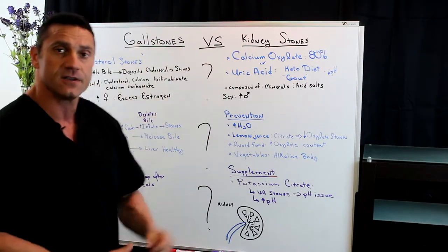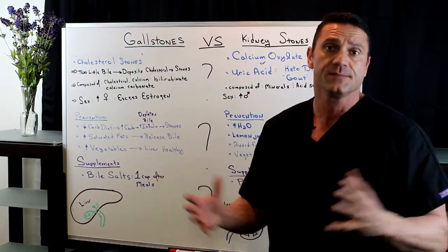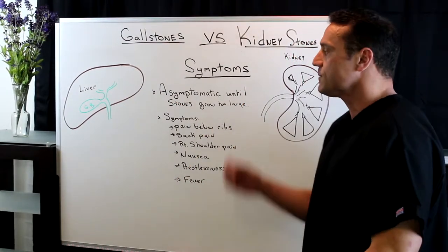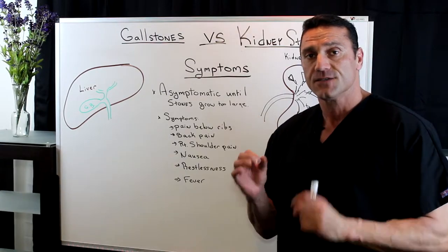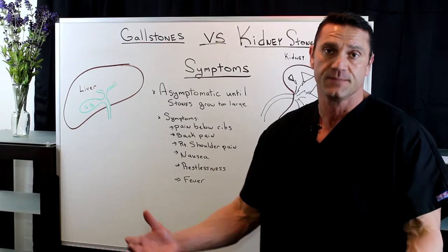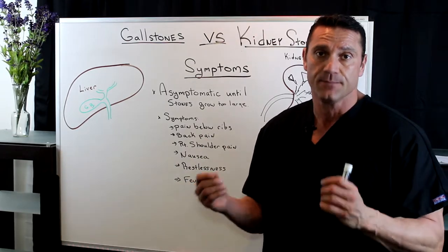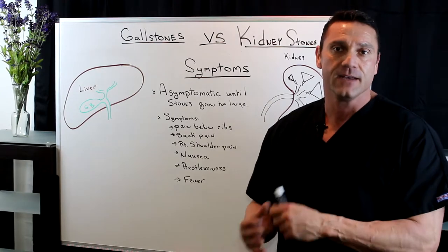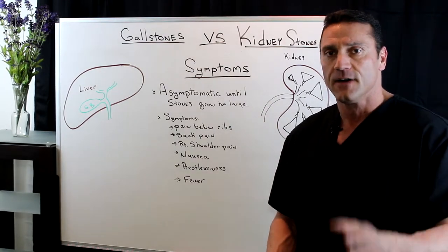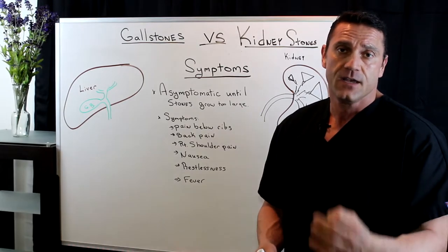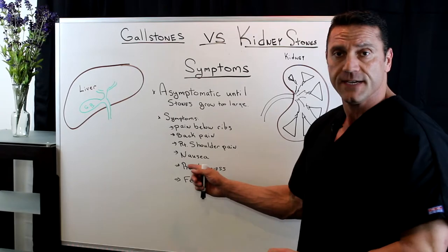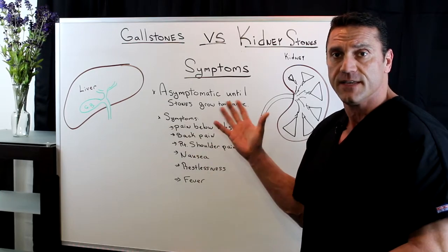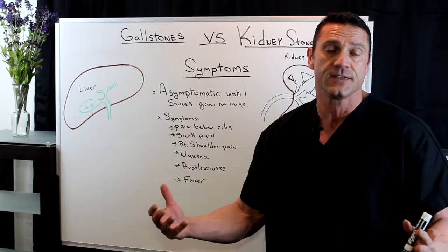So that's the difference between gallstones and kidney stones. The symptoms are very similar. What's tricky is that both are asymptomatic until the stones get too large — asymptomatic meaning without symptoms. By the time you're feeling something, the stones are already getting bigger. Symptoms overlap: pain below the ribs, back pain, right shoulder pain — typically indicative of gallstones, but you can still get right shoulder pain with kidney stones. Also nausea, restlessness, and fever. Gallstones and kidney stones share very similar symptoms, even though they're in different locations.